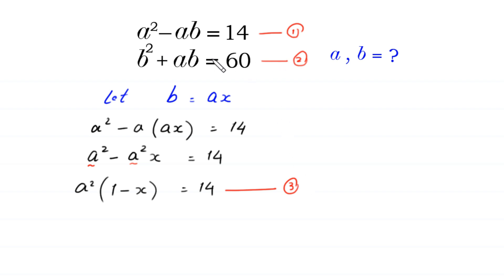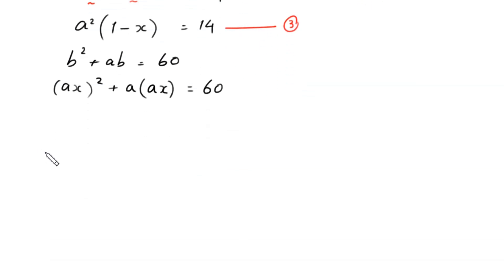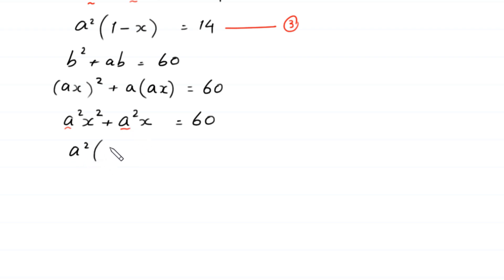Now, in Equation 2, we put the value of b as ax. Equation 2 is b squared plus ab equals 60. Substituting b = ax: (ax) squared plus a times ax equals 60, which gives a squared x squared plus a squared x equals 60. From here we factor out a squared: a squared times (x squared plus x) equals 60. We name this Equation 4.